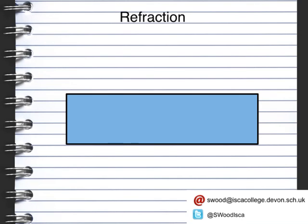We should remember that when light is shone from air or from a vacuum and it hits another medium — such as a glass block or some water — it will slow down, changing the speed at which it's moving. What happens is the wave will change the direction in which it's moving.